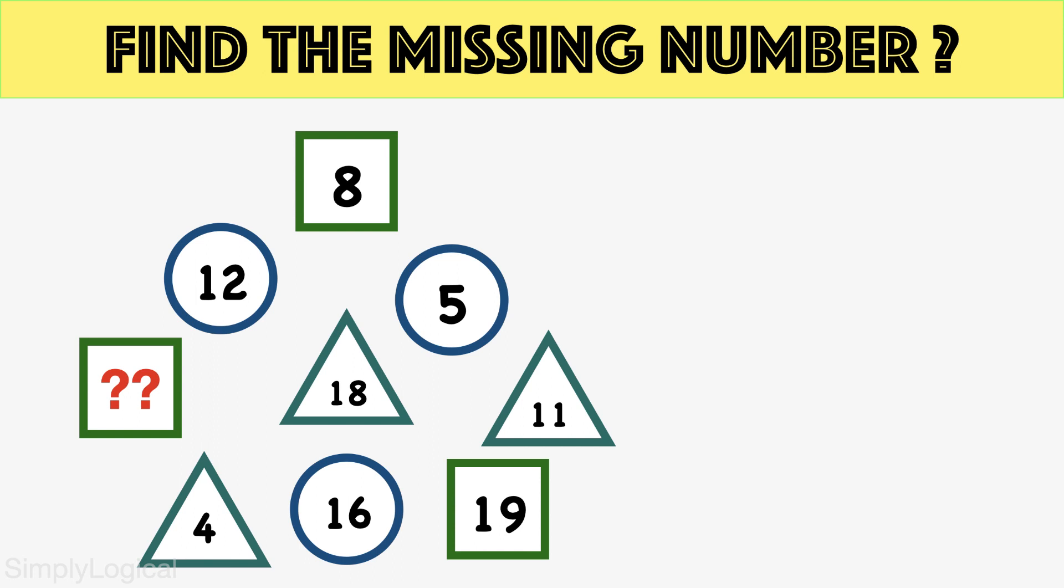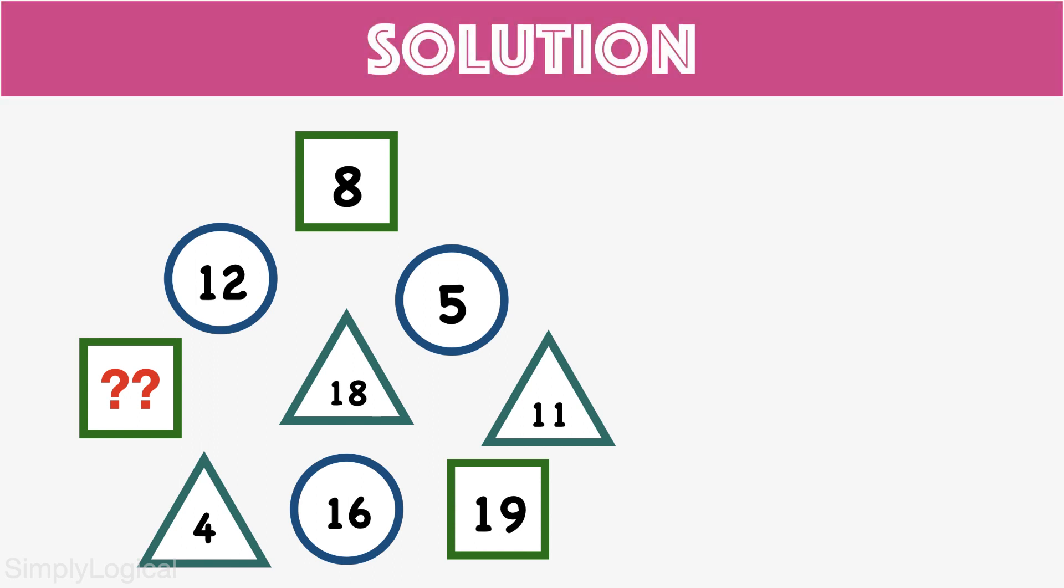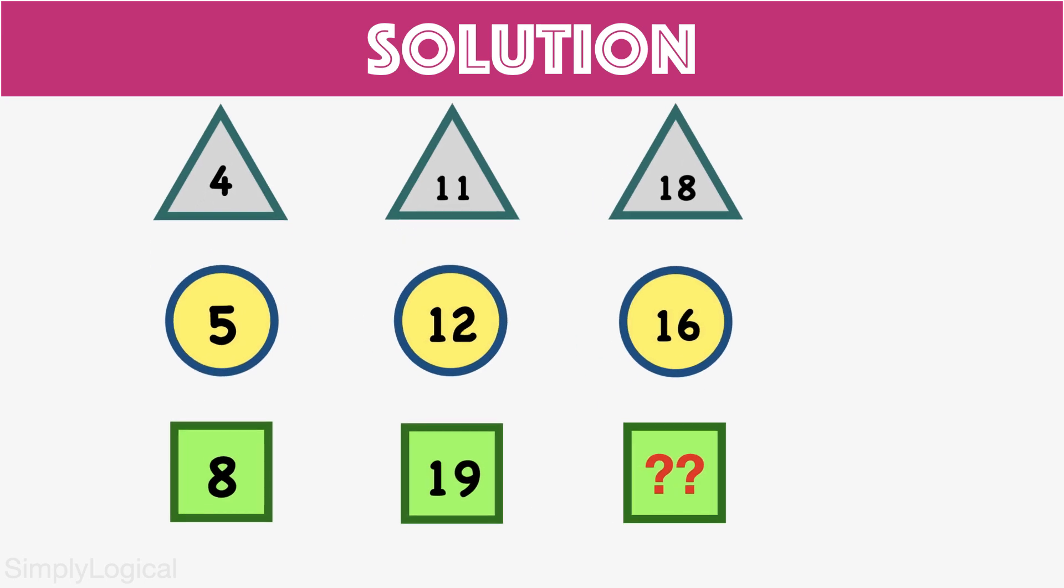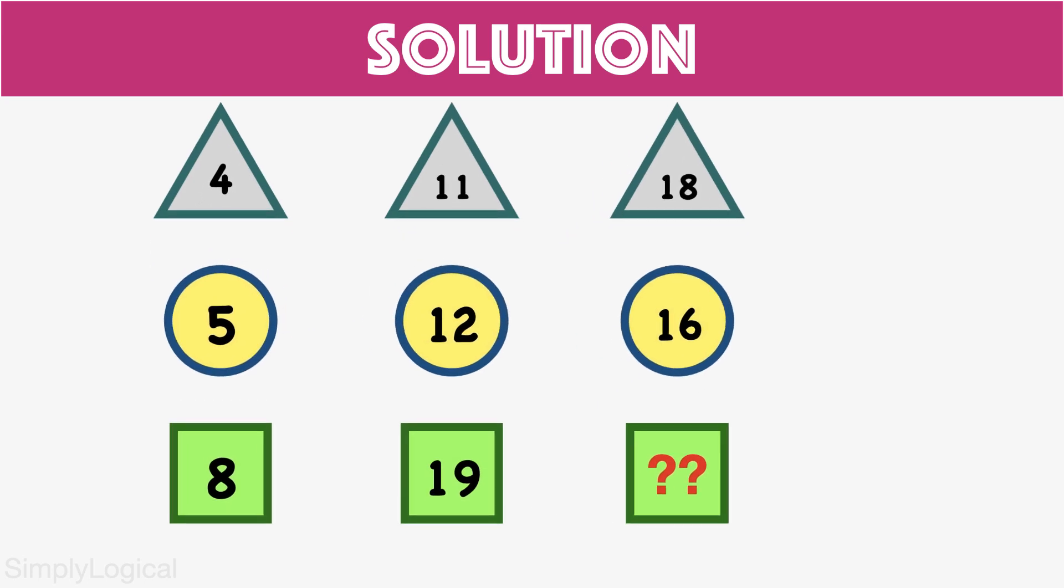Let me explain the solution now. Whenever you see this kind of geometrical mixed up puzzle, the first task is to arrange these figures correctly. Let's place all triangles in the first row, circles in the second row, and squares in the third row.